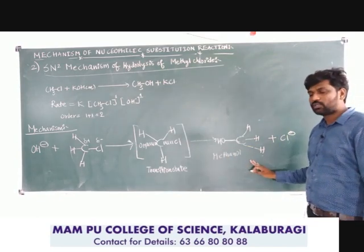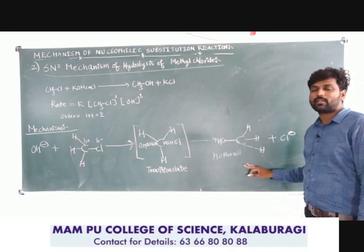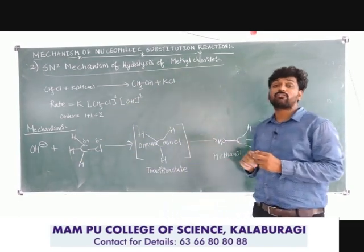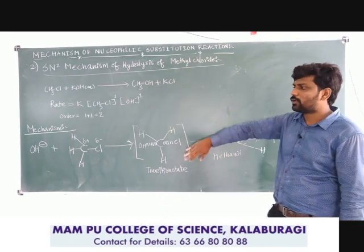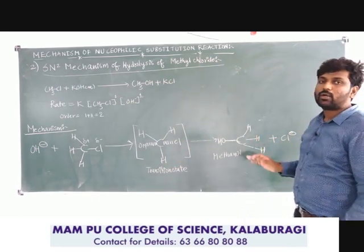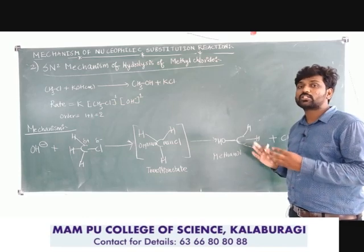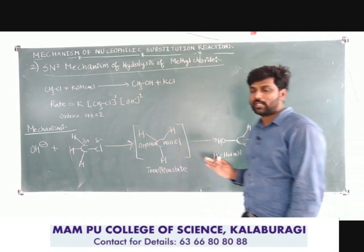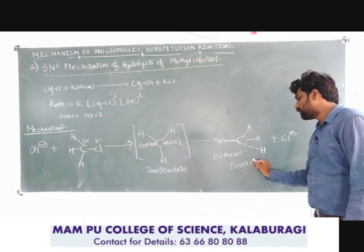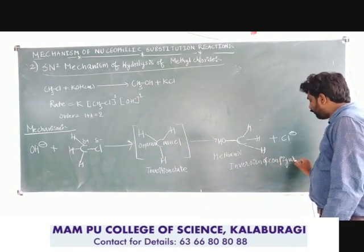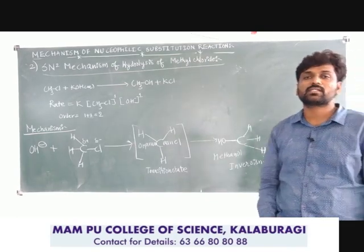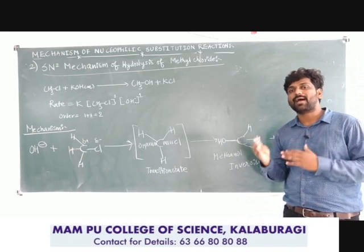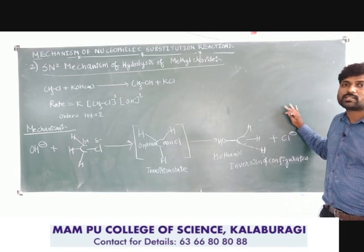The methanol product has inversion of configuration. Because the nucleophile attacks from the backside, all the C–H bonds rotate to the front side — from clockwise to anti-clockwise direction — so the product configuration is opposite to that of the reactant. This is called inversion of configuration. In SN2, the nucleophile can only attack from the backside; in SN1, the attack can be from either the front or the back side.